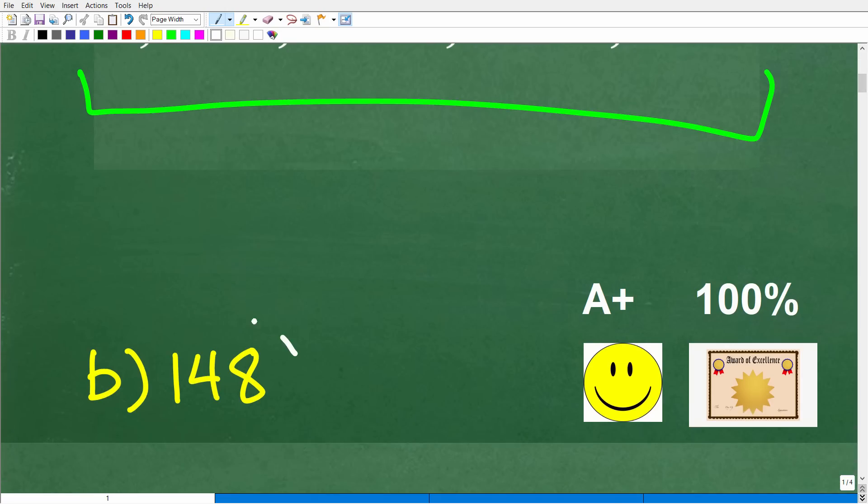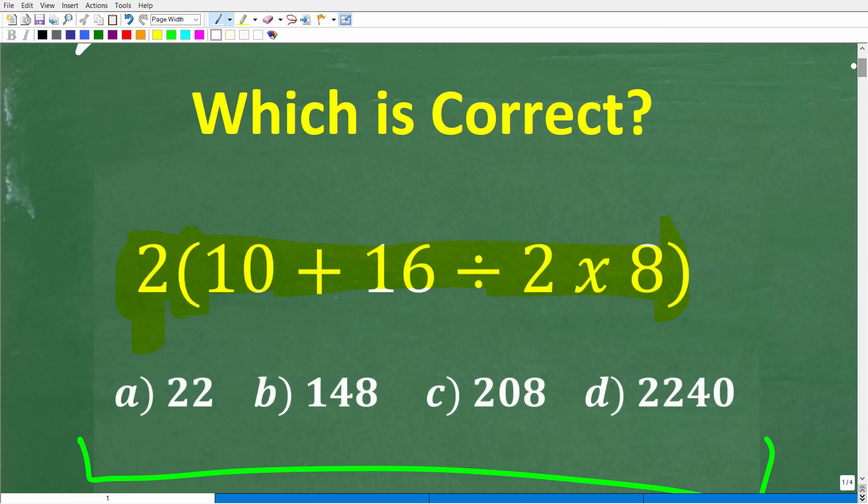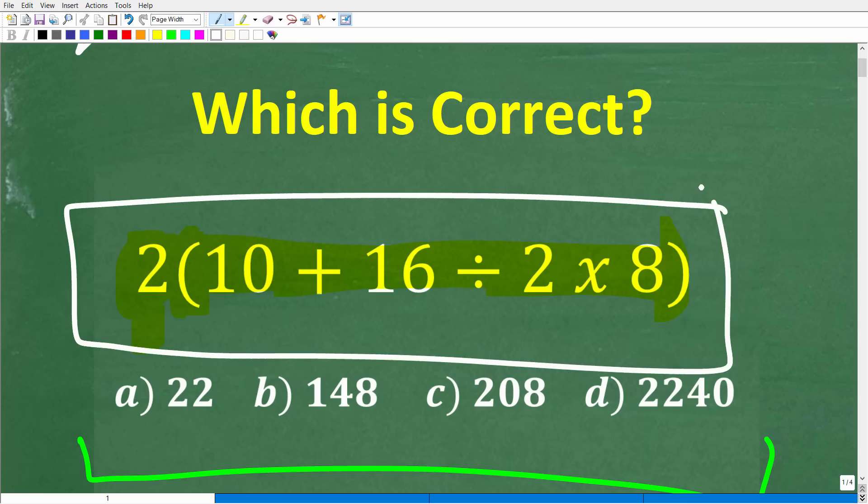So let's go ahead and take a look at the right answer. The correct answer is B, 148. Now, if you got this right, you definitely get a happy face and a plus, a 100%, and a certificate of excellence. Because, indeed, you appear to be a certified professional expert in the area of the order of operations.